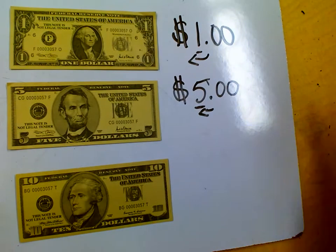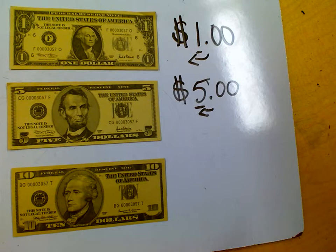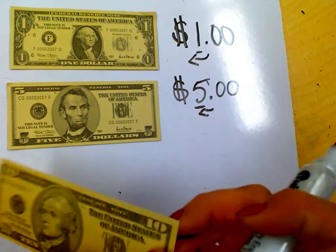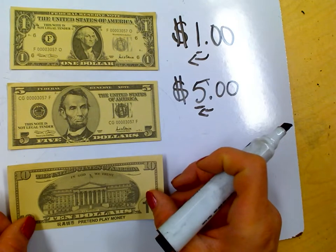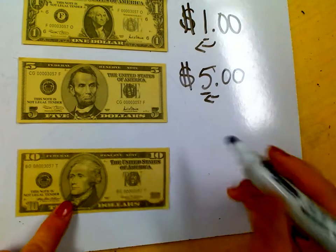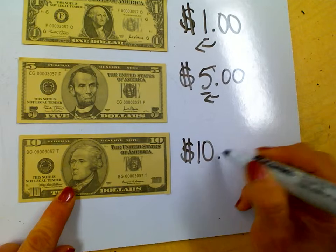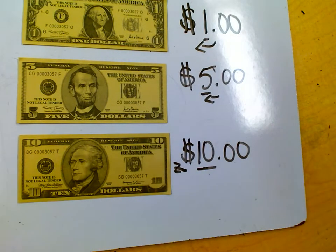When we look at the ten dollar bill, we have another president with short hair and a ten on it. On the back we see another building. The ten dollar bill is worth ten, so I would write my dollar sign and then ten with my decimal point: $10.00. That means I'm talking about the ten dollar bill.